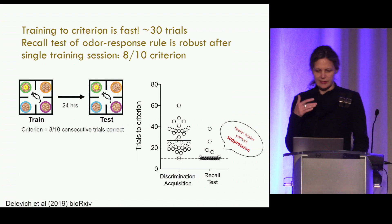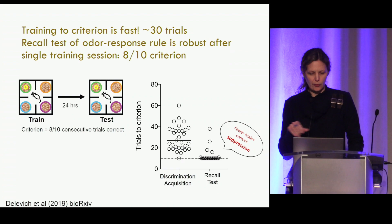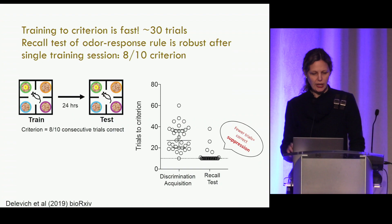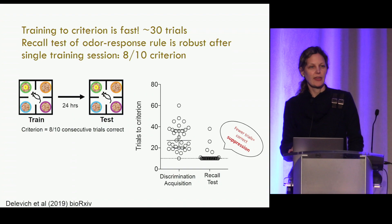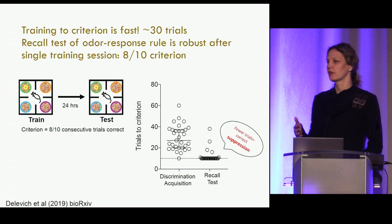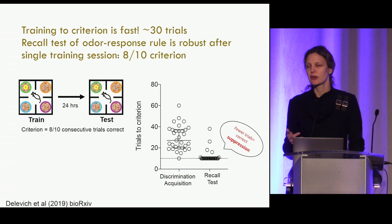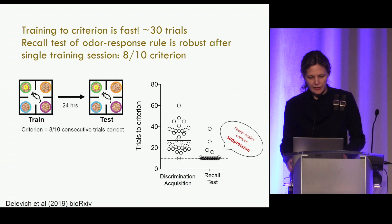In this way the task is a measure of learned suppression. The hardest odor for animals is the one they used to prefer — they've learned not to dig there even though they previously got no Cheerio and it's still attractive. Fewer trials to criterion equals correct suppression. On the recall test, almost all animals reach criterion in just 10 trials — the minimum possible — which is remarkable given they learned in only about 30 trials the previous day. I think that's a testament to how ethological this task is.